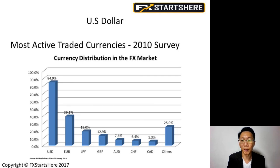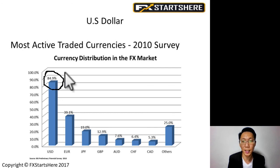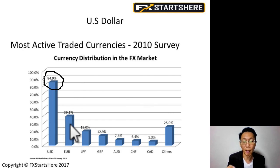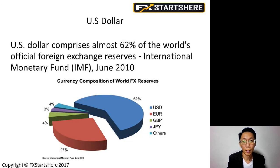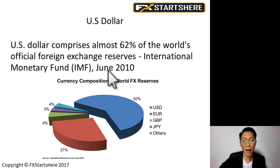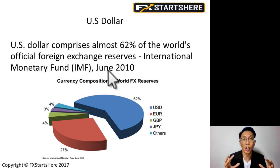These are the most actively traded currencies in the Forex market. At the top of the list is the U.S. dollar with close to 85% — meaning 85% of the daily Forex volume is made up of U.S. dollars. Then we have about 40% made up of the euro, and about 19% Japanese yen. The U.S. dollar also comprises almost 62% of the world's official foreign exchange reserves, according to the IMF. This explains why the U.S. dollar is so commonly traded.